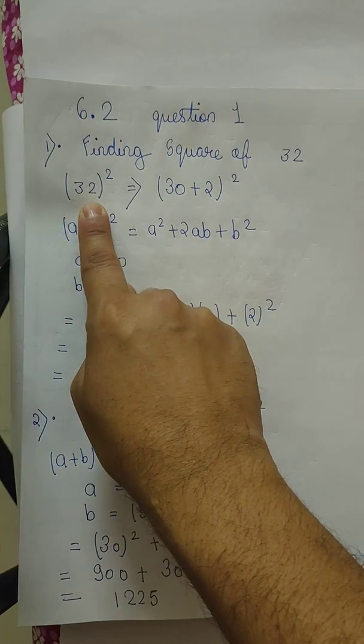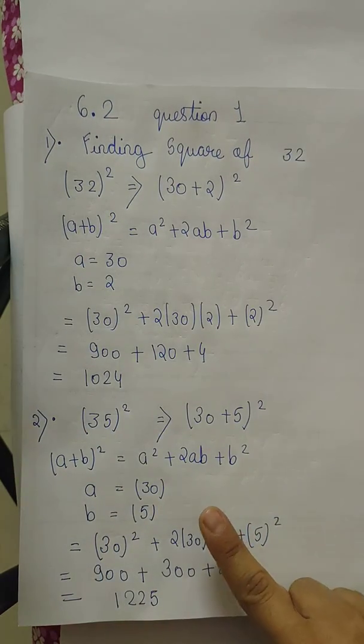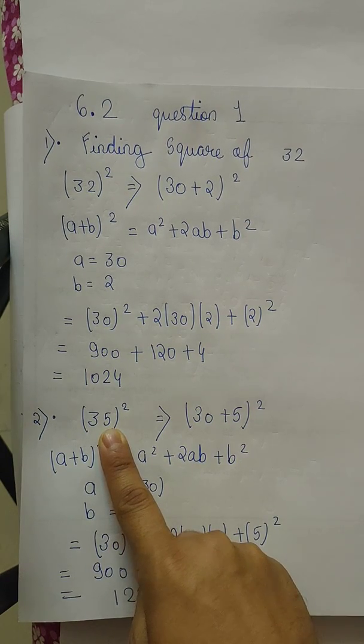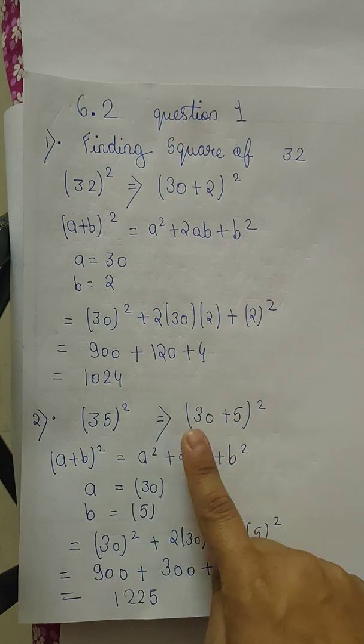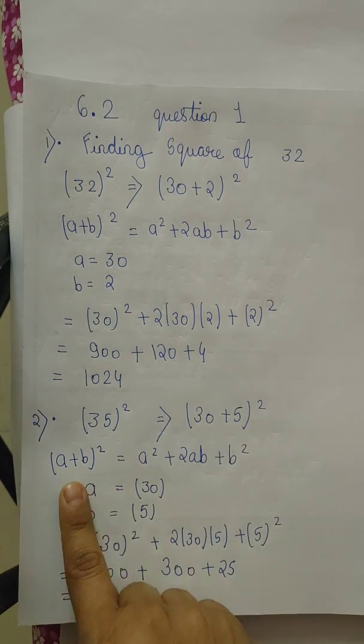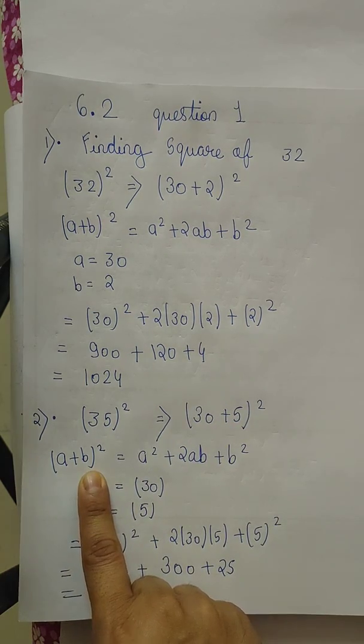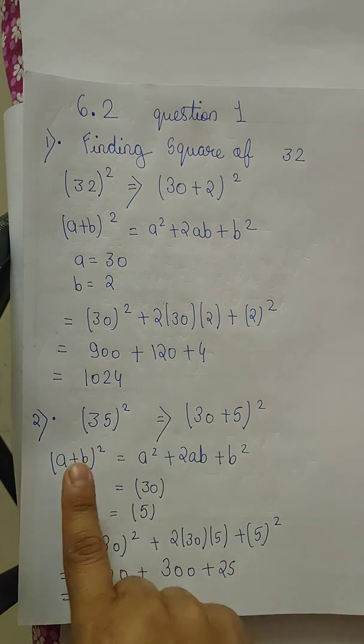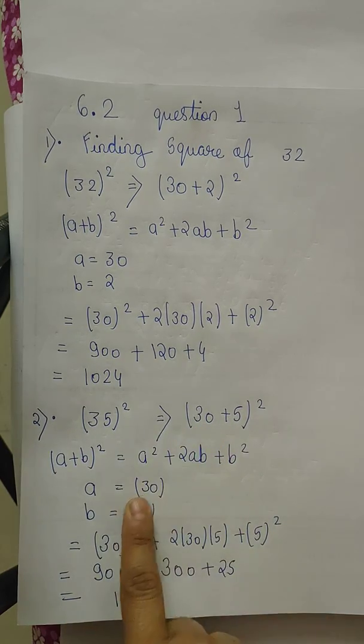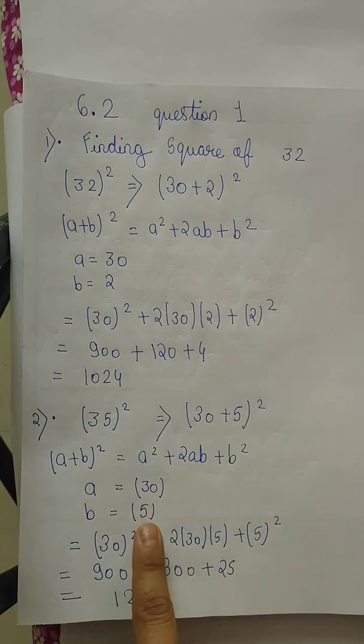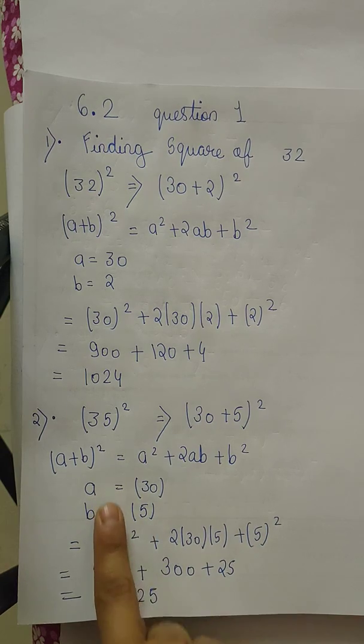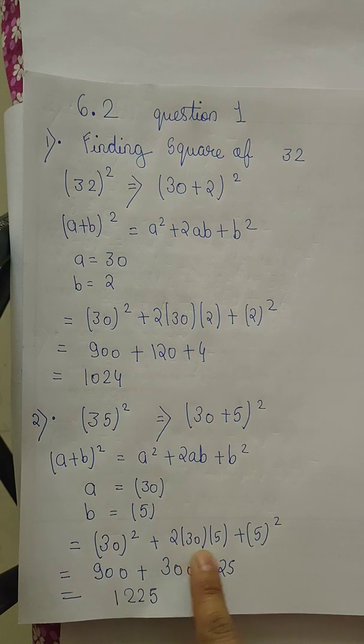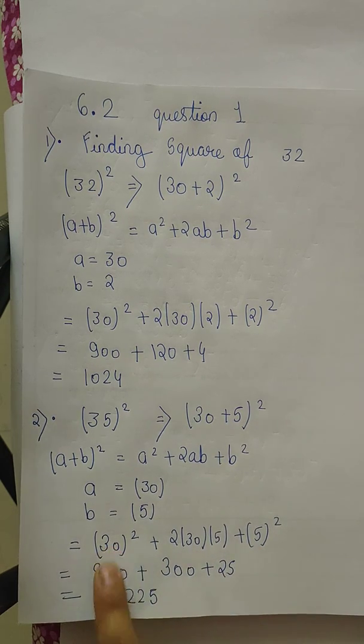Same as it is, question number second: 35². We have to find out 35 ka square. We will break it again into 30 plus 5 format, (a+b)², again that is a² + 2ab + b². Again we are comparing this value with this one. The value of a is 30, the value of b is 5. We will put this value into the formula.